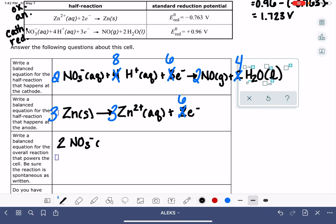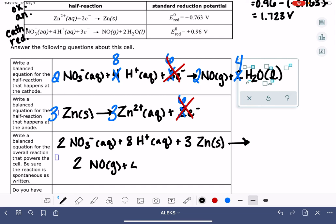I have for my first reaction two NO3 aqueous and eight H plus aqueous. And I'm not going to write down the six electrons because the six electrons will just completely cancel out. And I also have three zinc solid, and that's going to produce my products two NO gas plus four H2O liquid plus three zinc two plus aqueous.